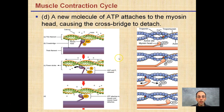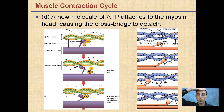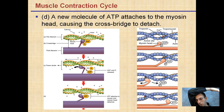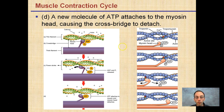A new molecule of ATP attaches to the myosin head, causing the crossbridge to detach. After going through the power stroke and moving the actin over, we need to detach, and if we repeat the process we would attach further along and slide it again. ATP attaches to the myosin head, and the myosin head detaches, leaving a gap and looking for another calcium molecule to allow myosin to bind to the thin actin filaments again.